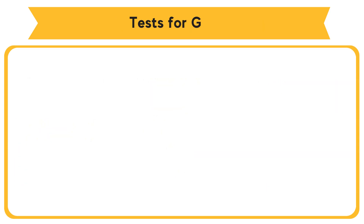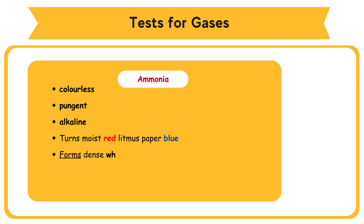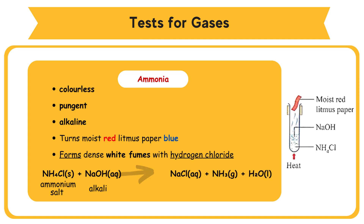Tests for Gases. Ammonia is colorless, pungent, and alkaline. It turns moist red litmus paper blue and forms dense white fumes with hydrogen chloride. It is produced by heating a mixture of ammonium salt with alkali: NH4Cl (solid) + NaOH (aqueous) → NaCl (aqueous) + NH3 (gas) + H2O (liquid).